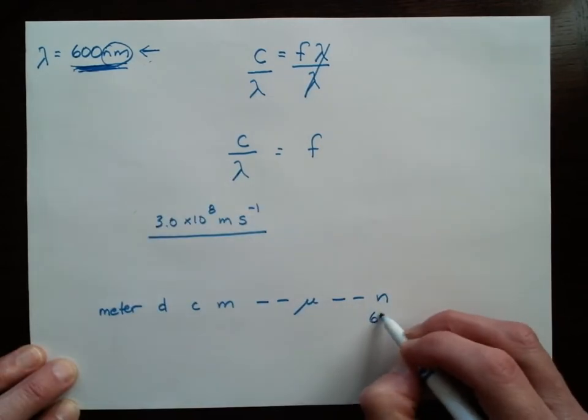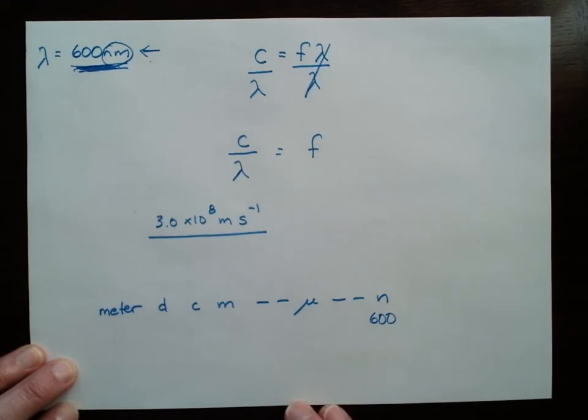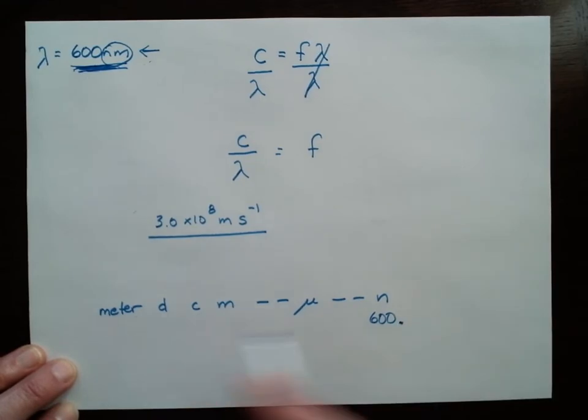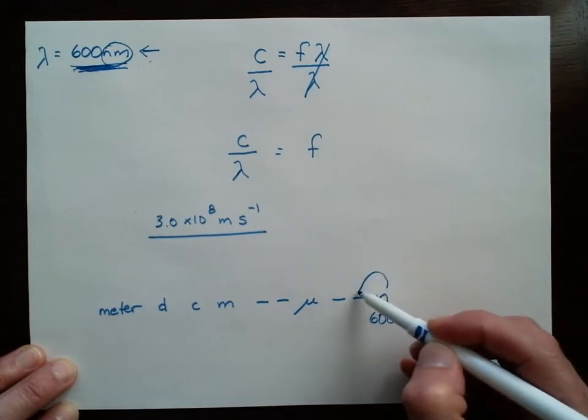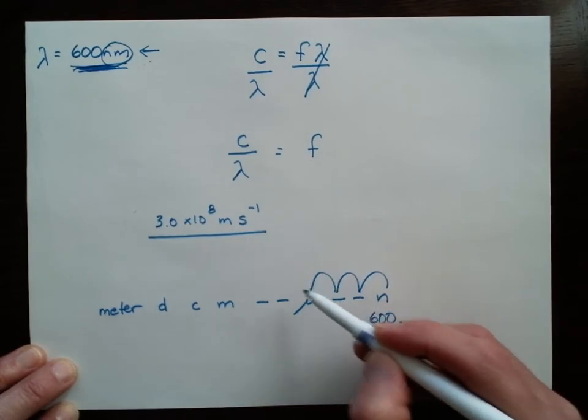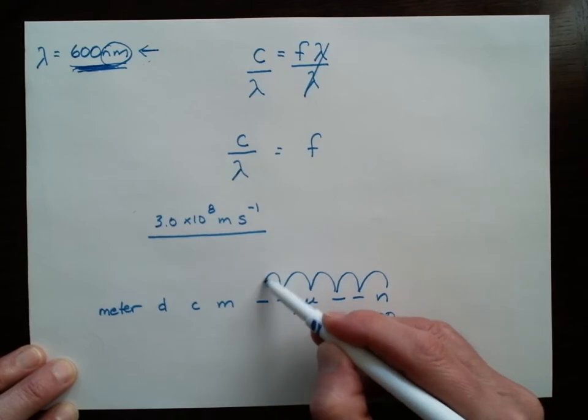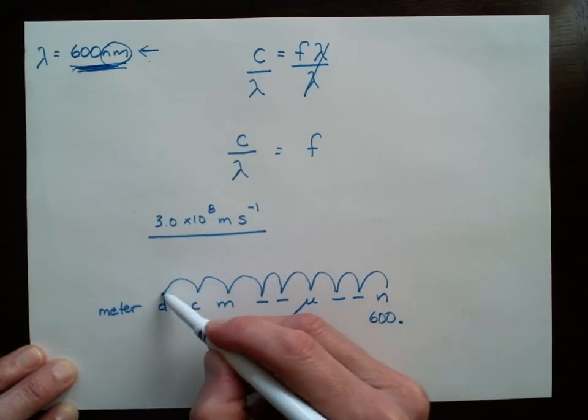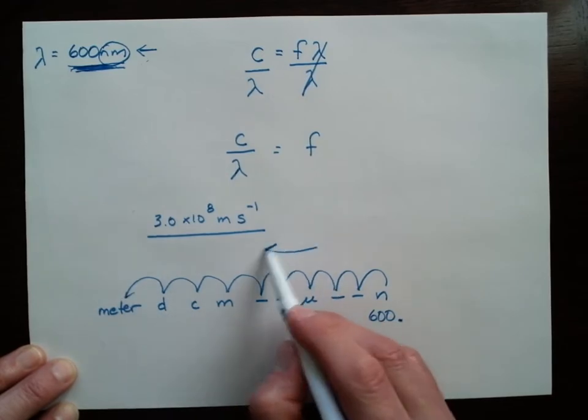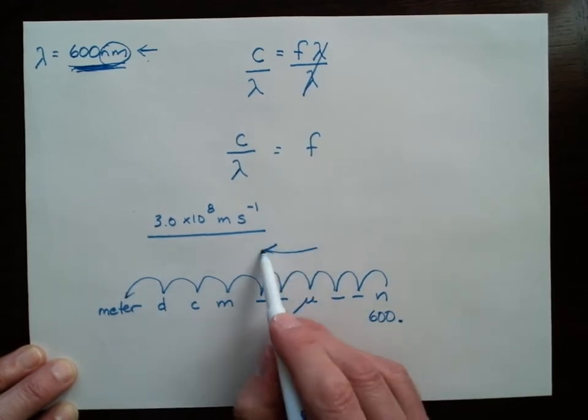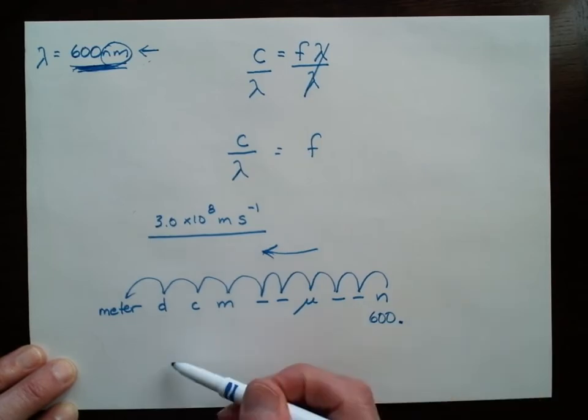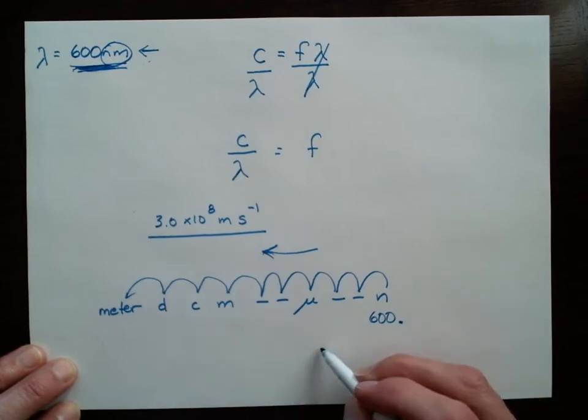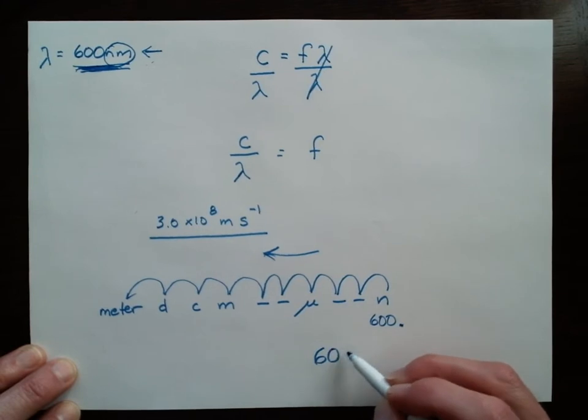So this 600, that's sitting all the way down here in the nano position. I'm going to stick a decimal right there. And to go to meter, I'm going to have to move 1, 2, 3, 4, 5, 6, 7, 8, 9 spaces in this direction. And so that means I'm going to need to move this decimal 9 spaces in this direction. I'm just going to draw this a little bit bigger here so I can keep track of it.